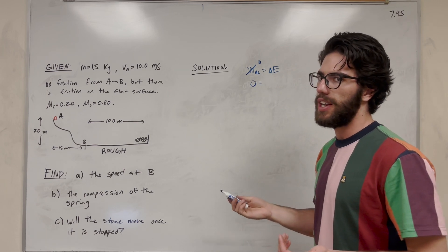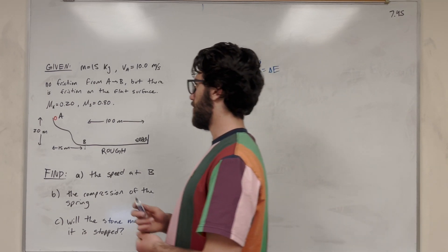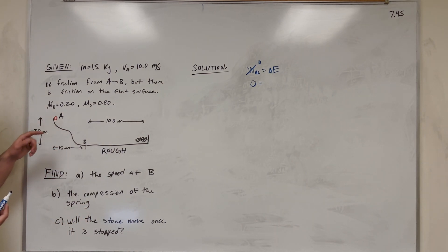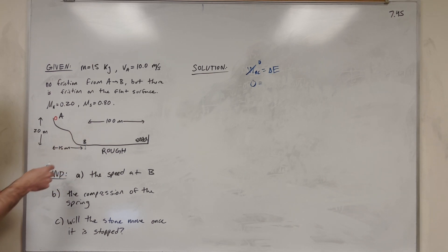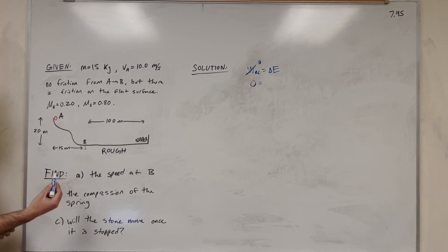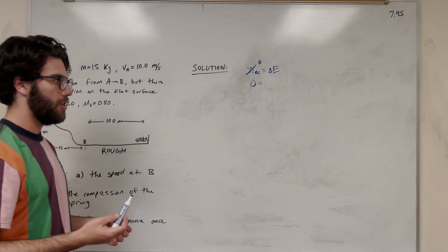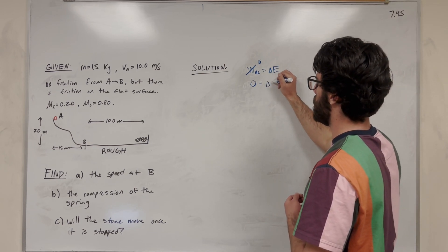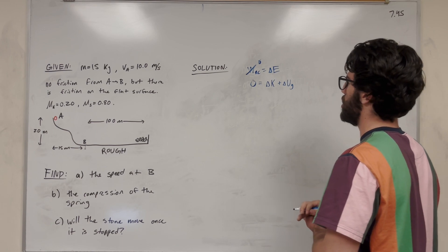Now let's find the changes of energy from A to B. We have kinetic energy — we start with a speed of 10 meters per second and end at B with a greater speed because we're going downhill. Then we have gravitational potential energy. We have this change in height from A to B, so we're going to lose gravitational potential energy as we go down. This change in energy becomes change in kinetic energy plus change in gravitational potential energy.